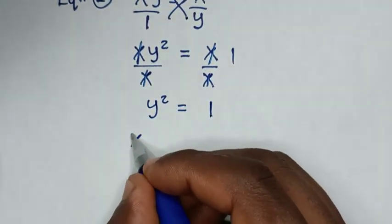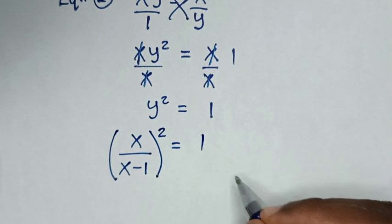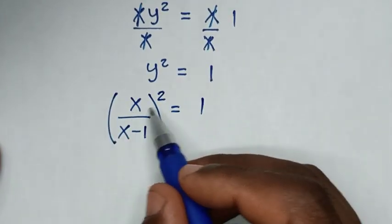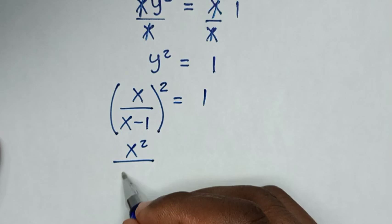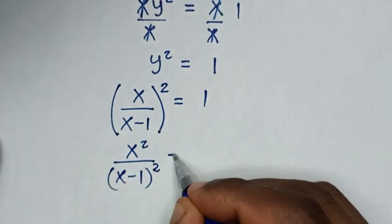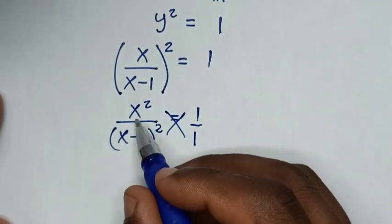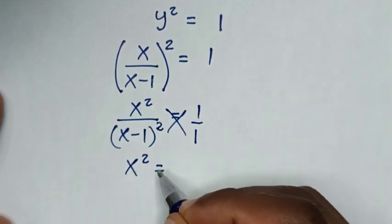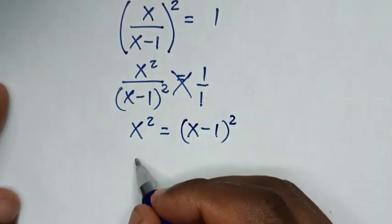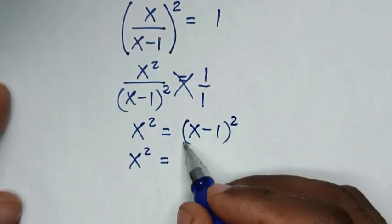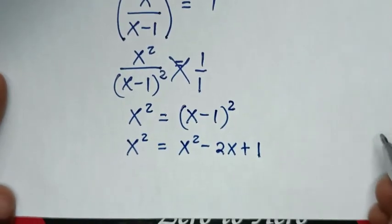So we have [x over (x minus 1)] squared equal to 1. We square the numerator inside the bracket: x squared over (x minus 1) squared equals 1. This is the same as over 1, so we cross multiply again, giving x squared equal to (x minus 1) squared. We expand (x minus 1) squared to get x squared minus 2x plus 1.